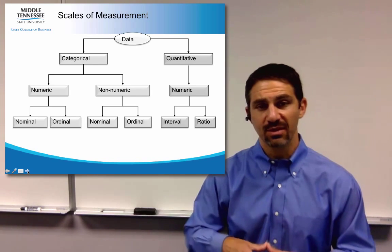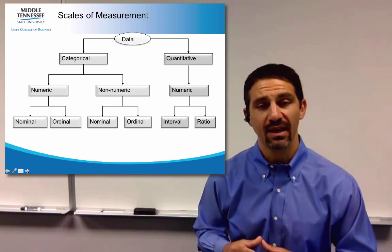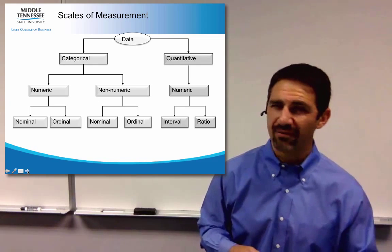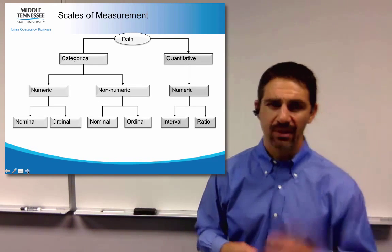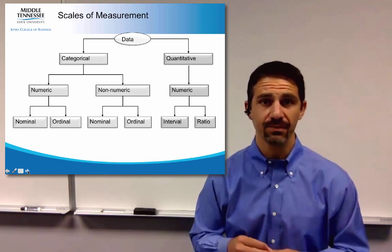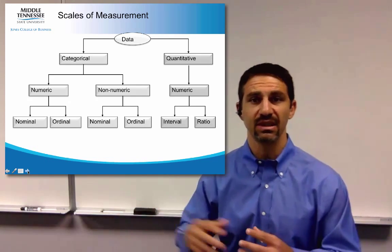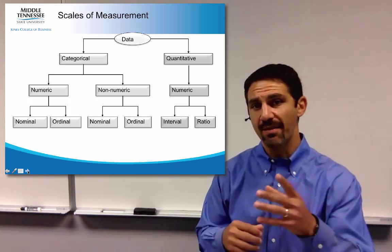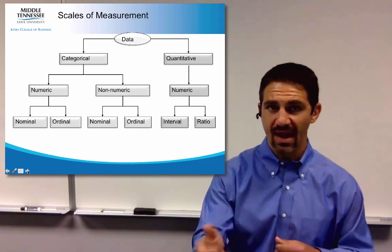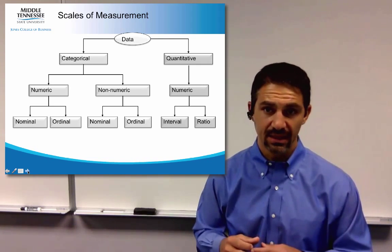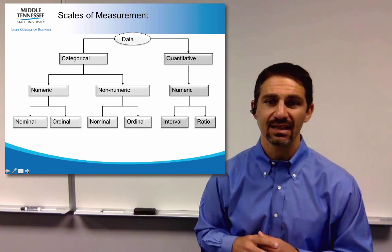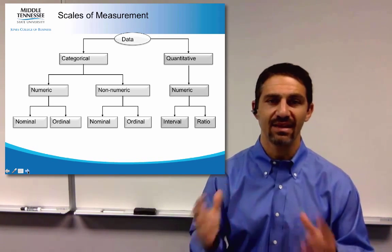That covers all the different data types — now we need to figure out what we can do with each. I'm not going to compute an average with nominal data; it just doesn't make sense. What's the average major? Instead, I can tell you the most frequent major, the least frequent major, and the frequencies for all of them. Frequencies are what I'd use for nominal or ordinal data. For quantitative data, I can compute an average IQ, average height, or the average salary you'll make once you get your degree.